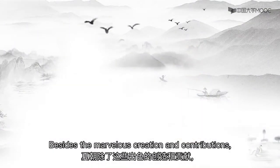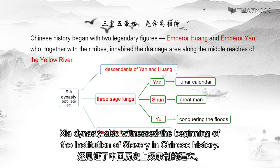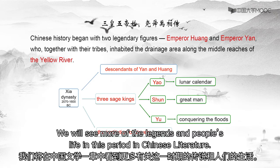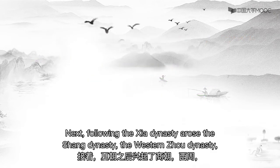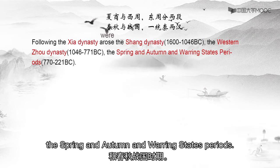Besides the marvelous creations and contributions, the Xia Dynasty also witnessed the beginning of the institution of slavery in Chinese history. We will see more of the legends and people's life in this period in Chinese literature. Next, following the Xia Dynasty arose the Shang Dynasty, the Western Zhou Dynasty, and the Spring and Autumn and Warring States period.